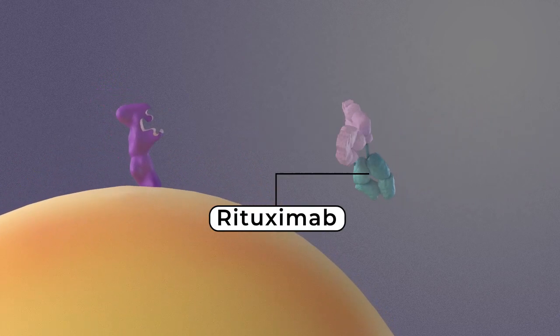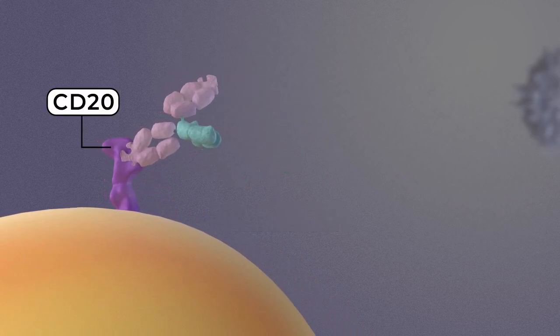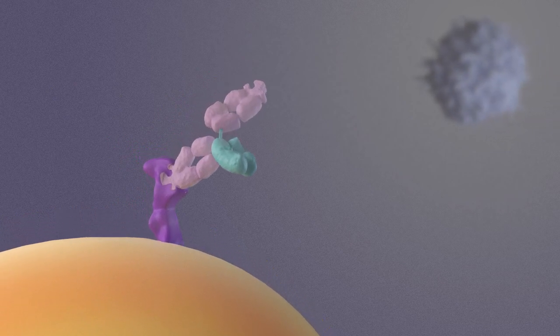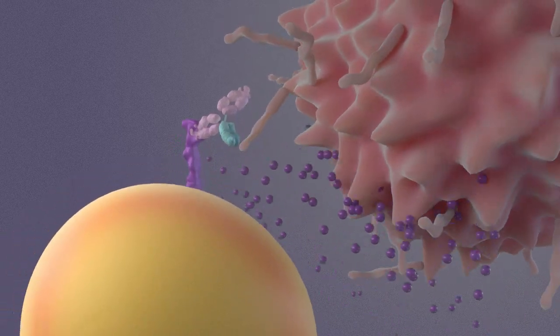For example, when the monoclonal antibody rituximab attaches to a molecule called CD20 on cancer cells, it acts like a flag for immune cells. The immune system sees this flag and destroys the cancer cells.